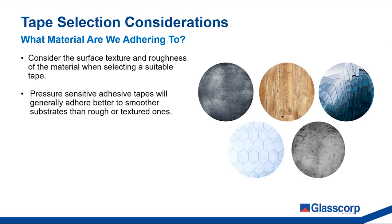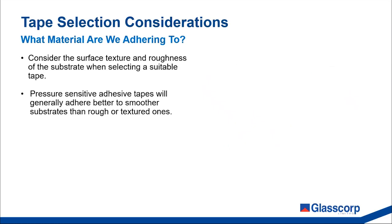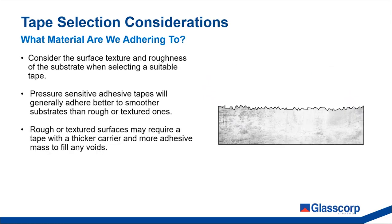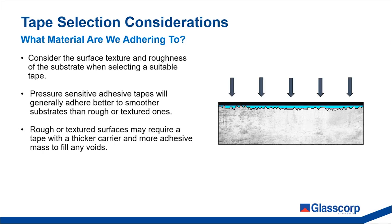Pressure sensitive tapes will generally adhere better to smoother substrates than rough or textured ones. Rough or textured surfaces may require tape with a thicker carrier and more adhesive mass to properly wet out any voids on the substrate, as illustrated in the graphic. Applying a thin tape to a rough surface leaves insufficient adhesive to fully wet out the voids and crevices, leaving air pockets and potential weak points which could cause failure of the tape. Replacing this with a tape with a thicker adhesive mass allows for complete wet out and adhesion to the rough surface.